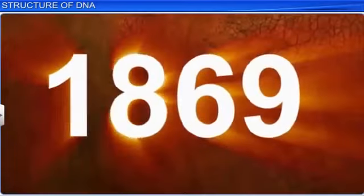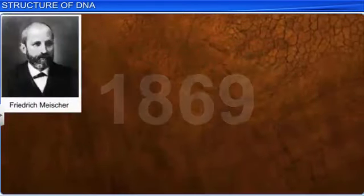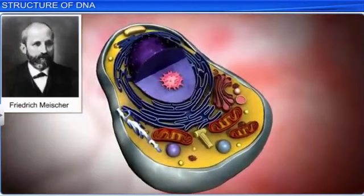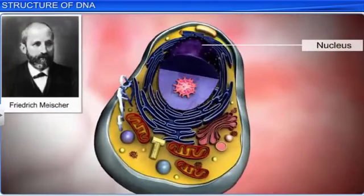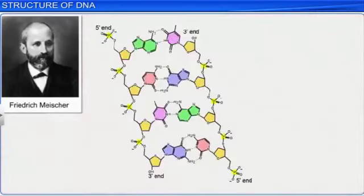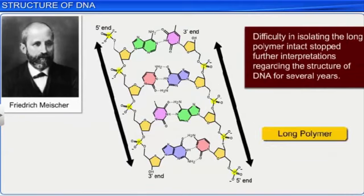It was in the year 1869 that Friedrich Miescher first identified DNA as an acidic material present in the nucleus and called it the nucleon. However, technical limitations made it very difficult to isolate such a long polymer intact, and therefore no further interpretations regarding the structure of DNA were made for several years.